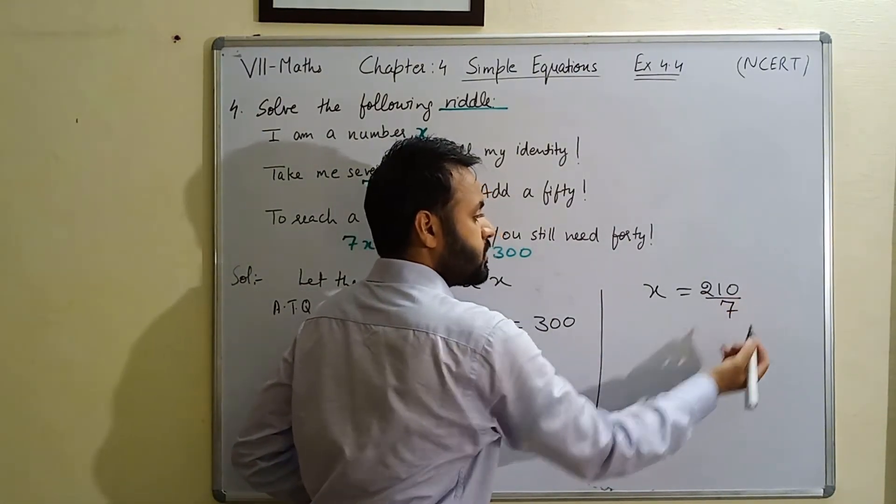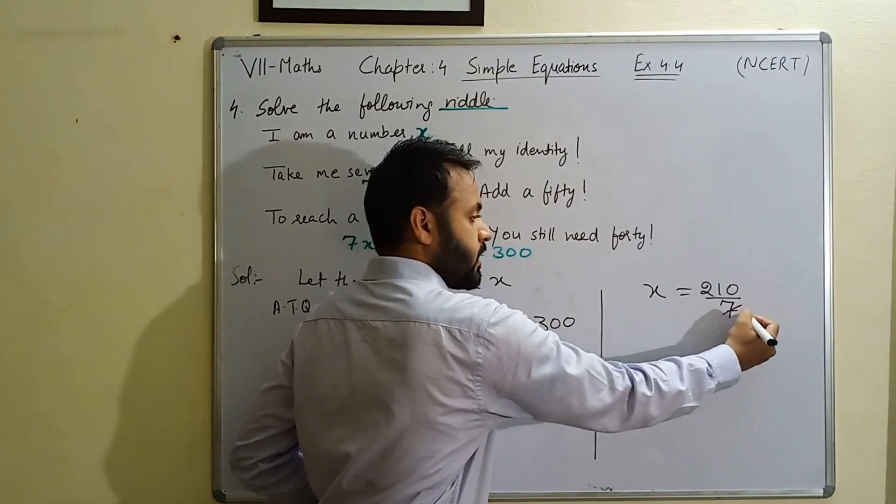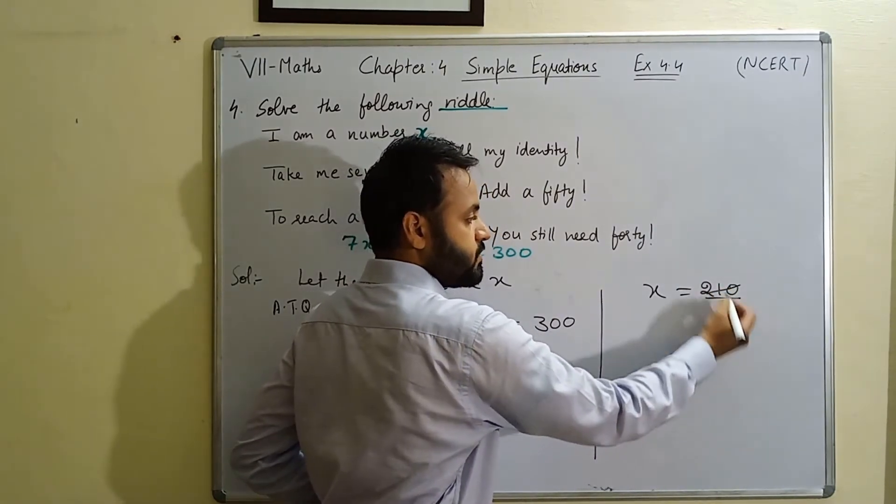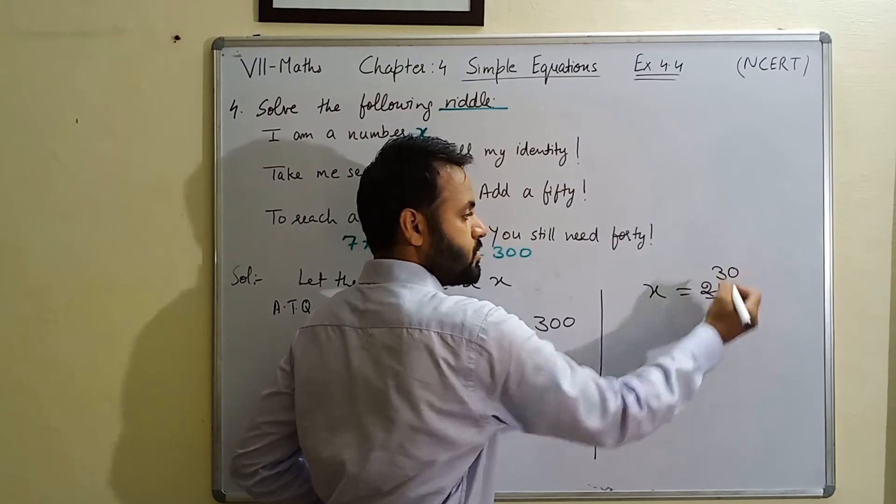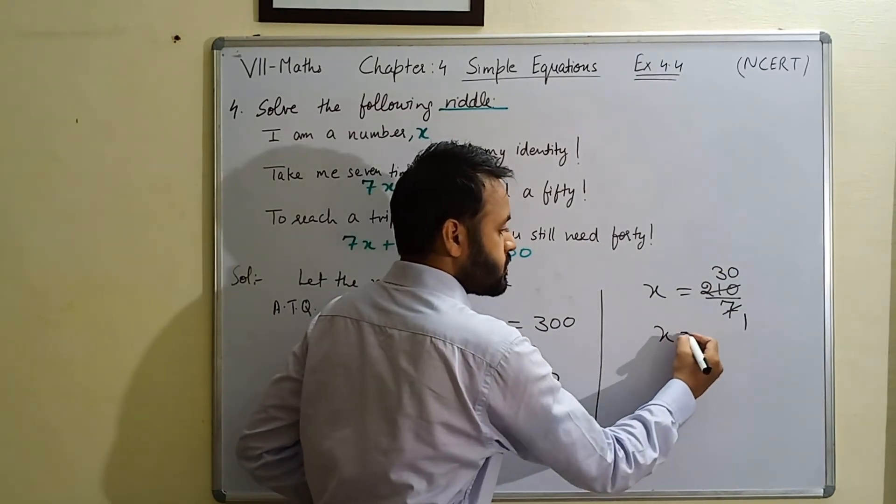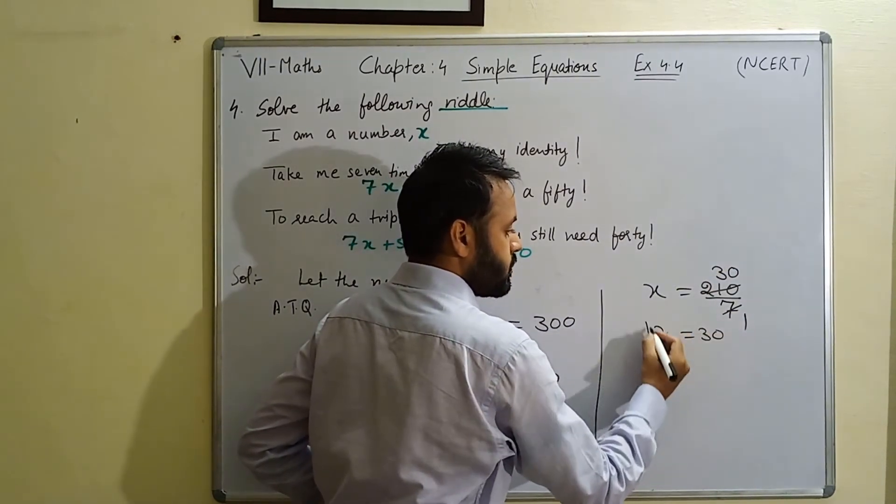So yeha pe 7 divide karega 210 ko. Now we can cancel it out. 7 ones are 7, 7 threes are 21, and we have one 0 here. The value of x comes out to be 30 here.